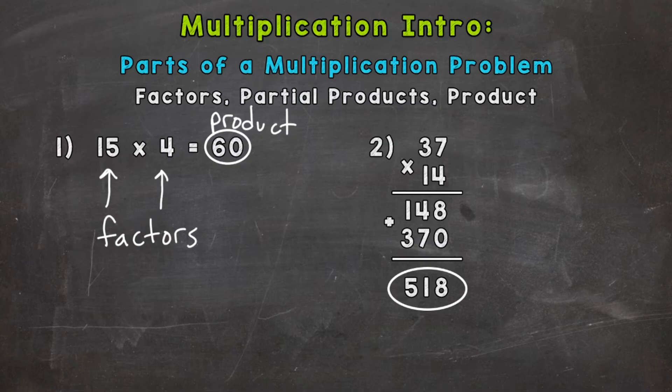And for number two, we have 37 times 14. And I solved the problem there. So again, the two numbers that we multiplied together, this 37 and the 14, these are factors.